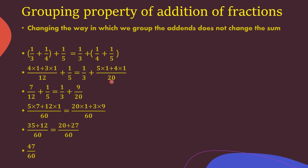Similarly, just like the commutative property, you will get questions in the form of fill in the blanks. If 1/5 is missing and you have the complete equation, because of the grouping property you can find that 1/5 will come there — you can find the answer immediately.